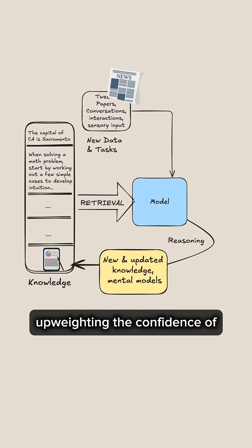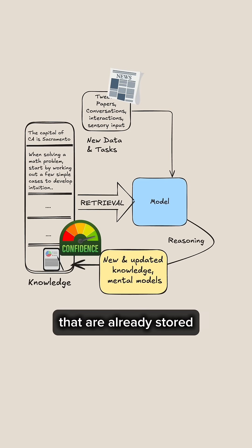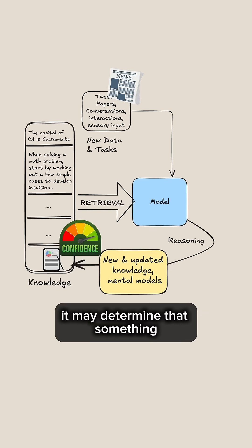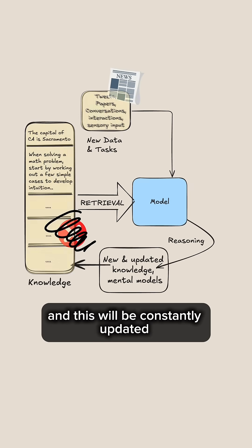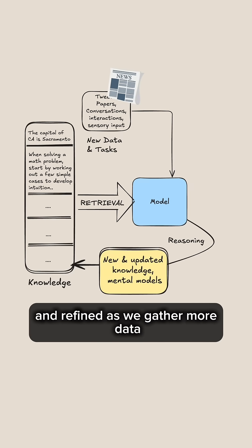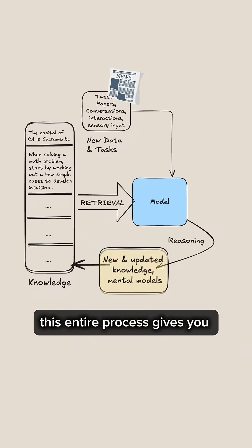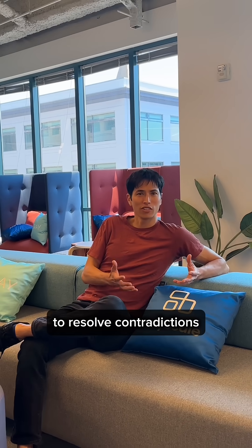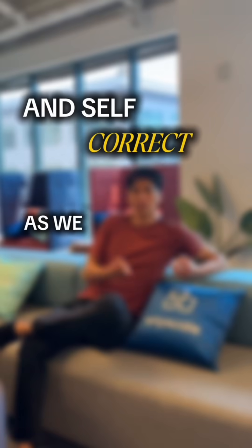This might mean upweighing the confidence of certain pieces of knowledge that are already stored. It may determine that something already stored is incorrect and overwrite that. This will be constantly updated and refined as we gather more data. This entire process gives you a way to use reasoning to resolve contradictions and self-correct as you encounter new data.